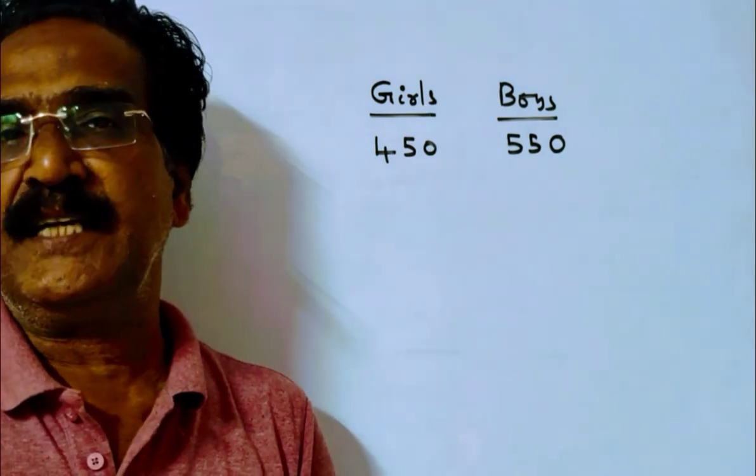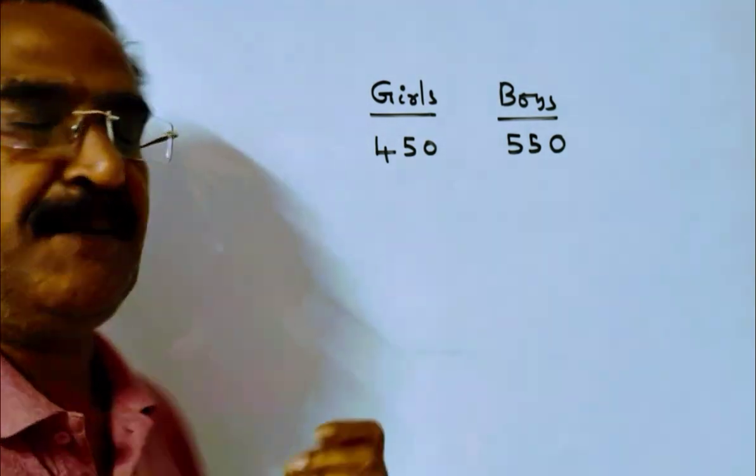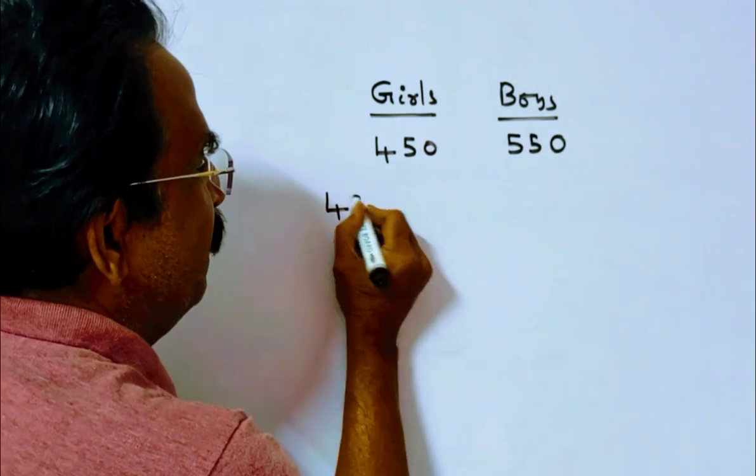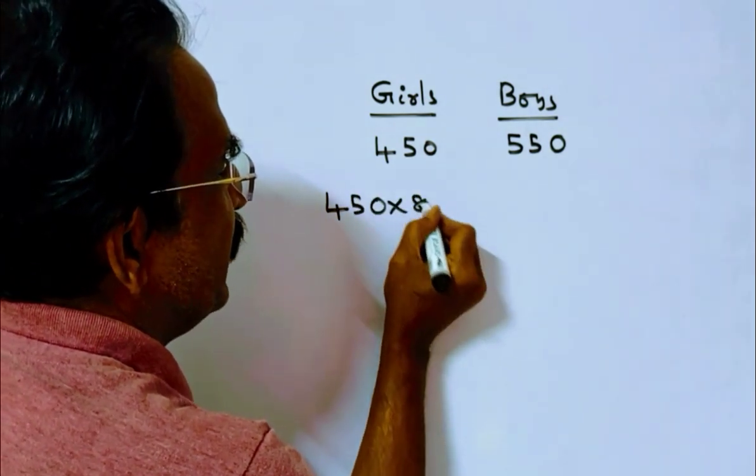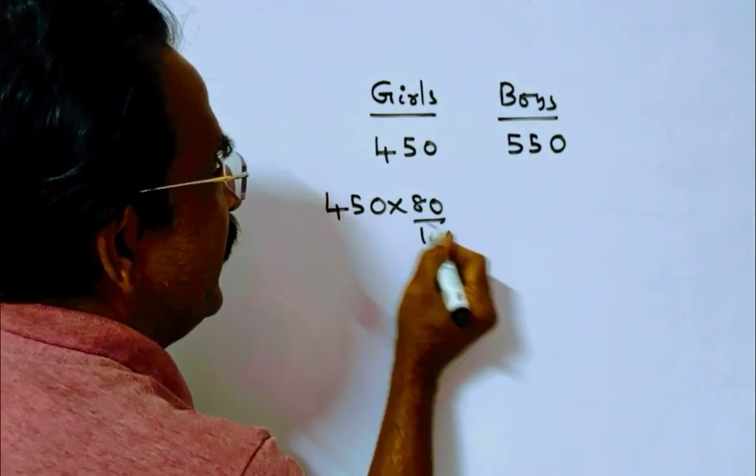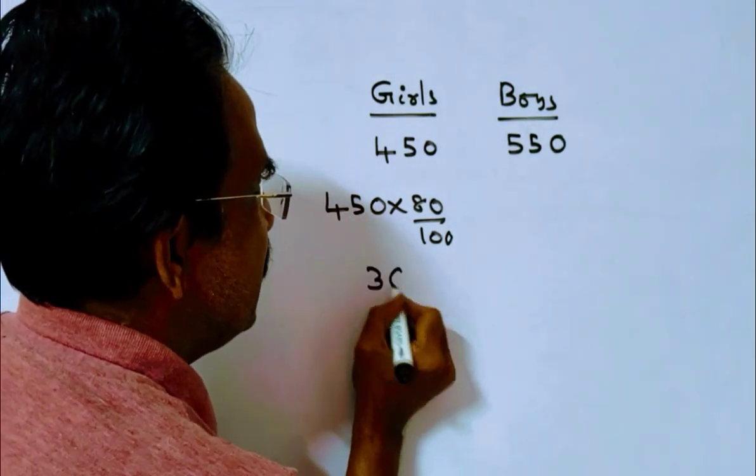80% of the girls scored more than 75% marks. 80% of 450, 8×45 is 360. So 360 girls scored more than 75% marks.